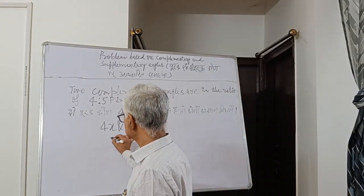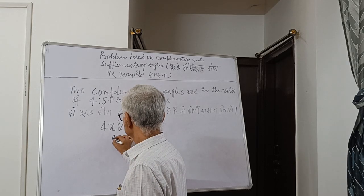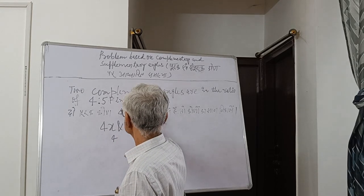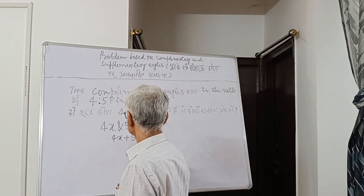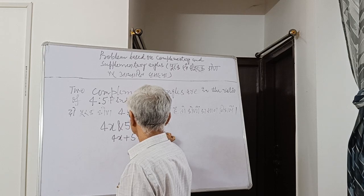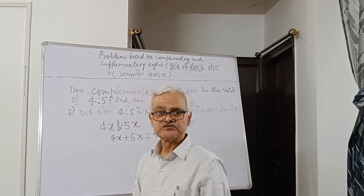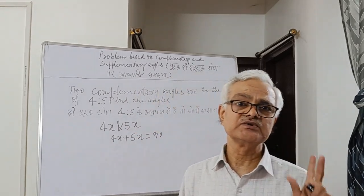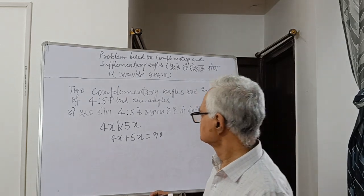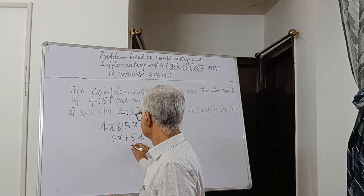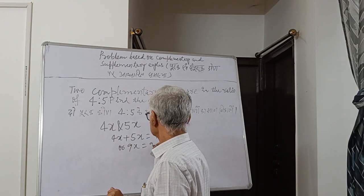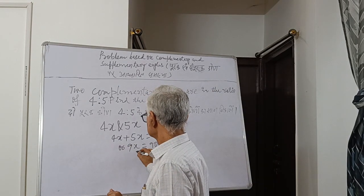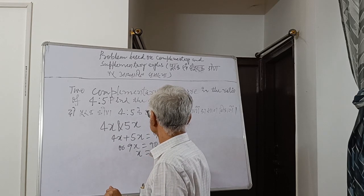As we all know, the sum of complementary angles is equal to 90. So 4x plus 5x is equal to 90. And 9x is equal to 90. So x is equal to 10.